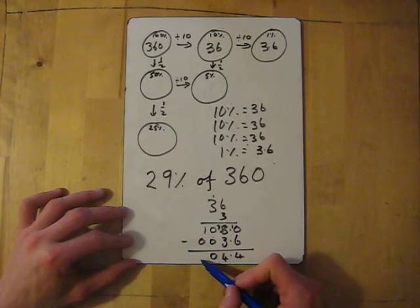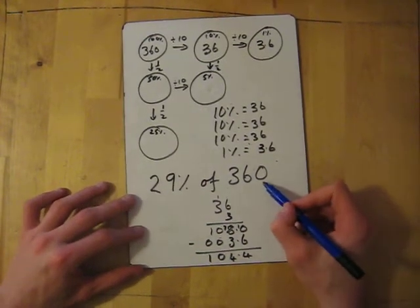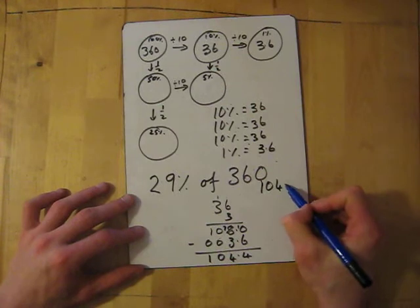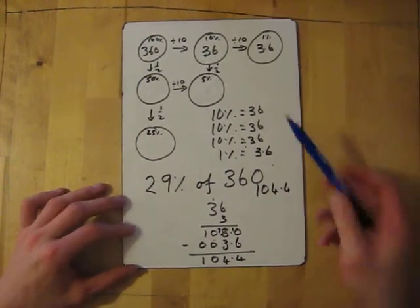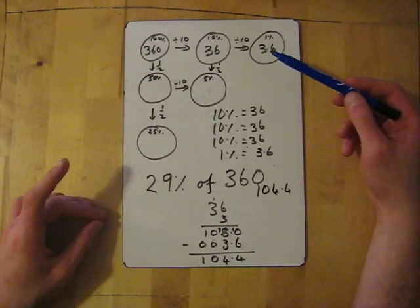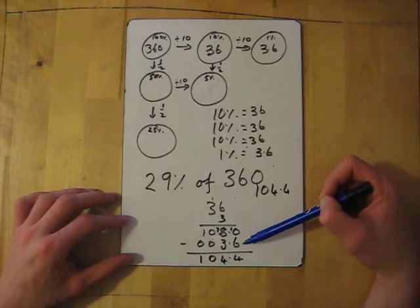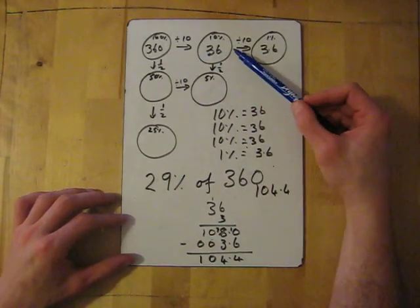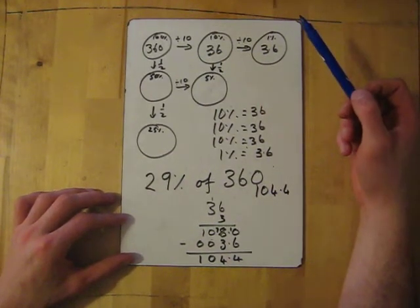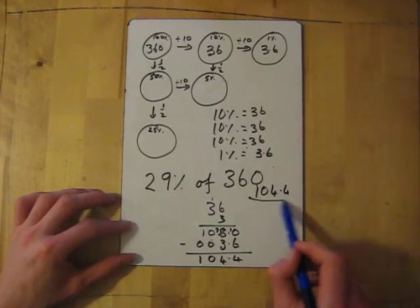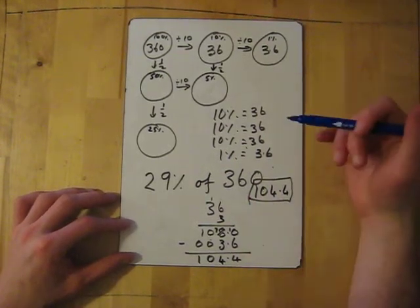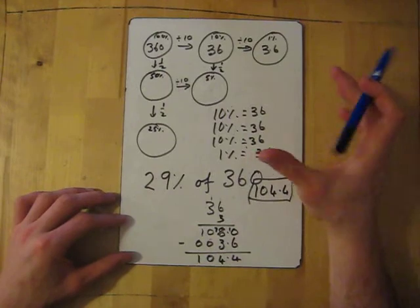Take away 0 is 0. 1 take away nothing is 1. So my answer is 104.4. What you'll notice is percentage numbers—there's a couple of skills you need: you need to be able to add and subtract and divide by 10 quite swiftly. That's why this is later on in the package.